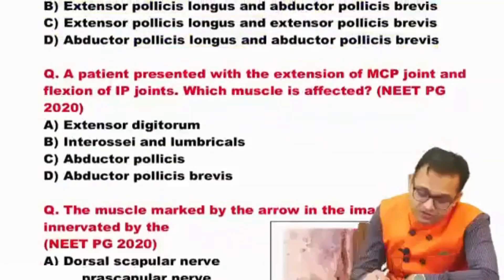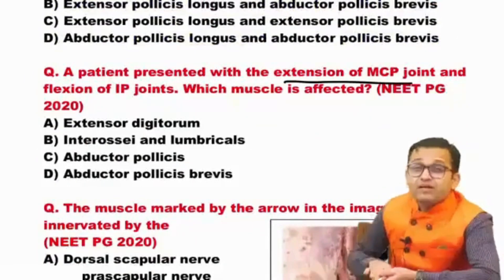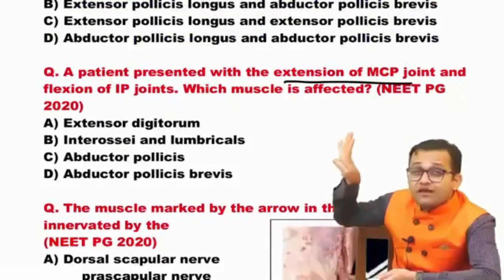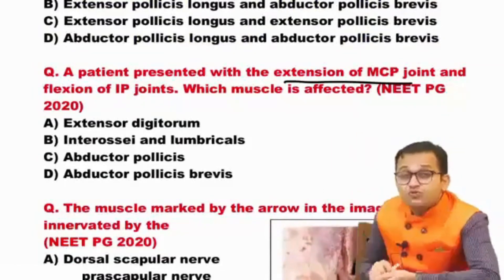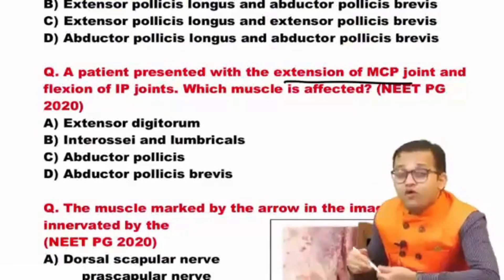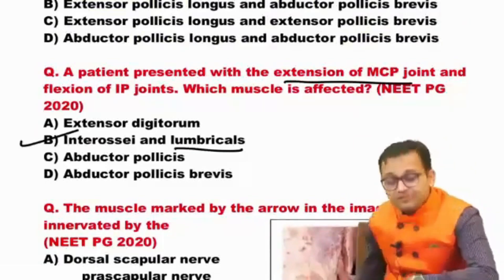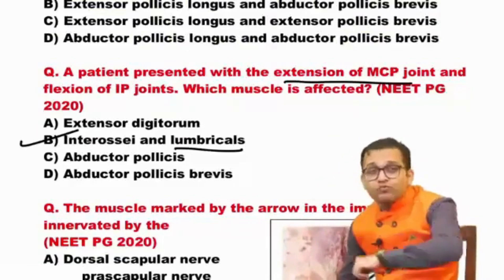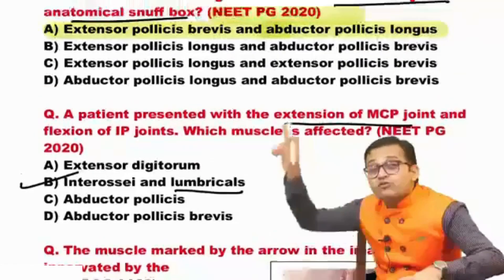Next question: a patient presented with extension at the metacarpophalangeal joint and flexion of the interphalangeal joint — which muscle is affected? This is due to involvement of the lumbrical, which is answer B. In intrinsic minus hand, the lumbrical is affected. Answer is B, so we have to study the anatomical snuffbox and the short intrinsic muscles.